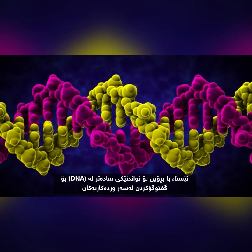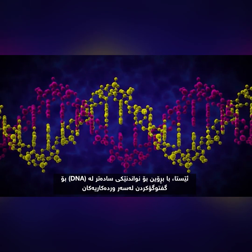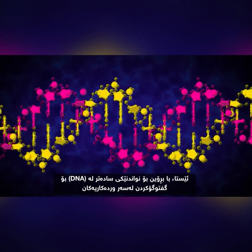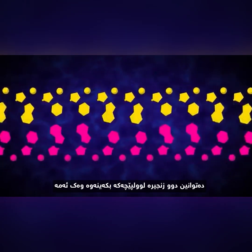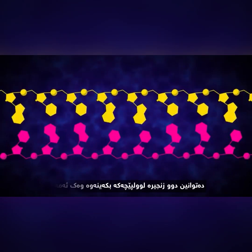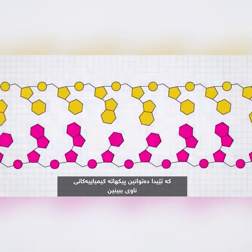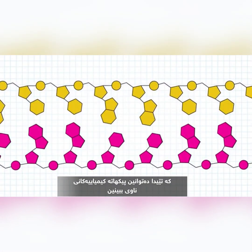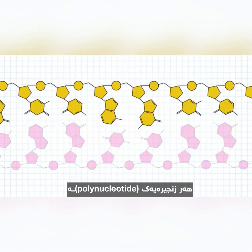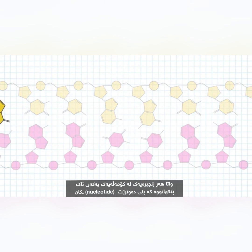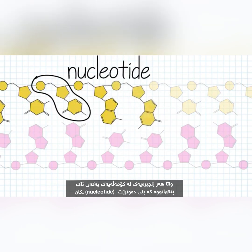Now, let's move to a more simplified representation of DNA to discuss the details. We can unwind the double helix like this, so that we can see the chemical structure inside. Each strand is a polynucleotide, meaning the strand is made up of many individual units called nucleotides.